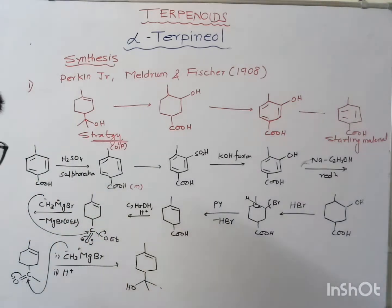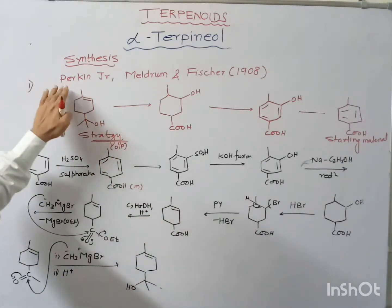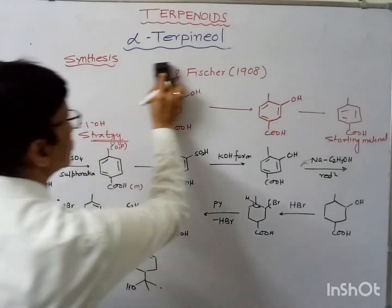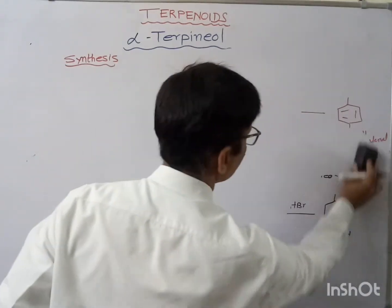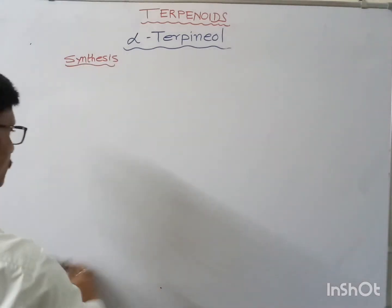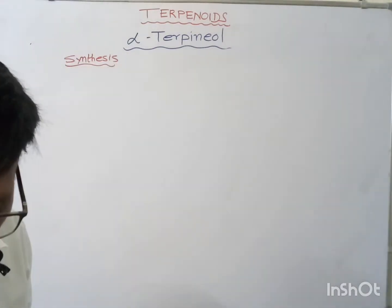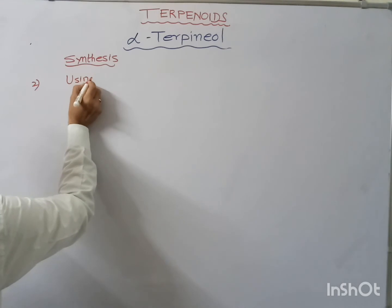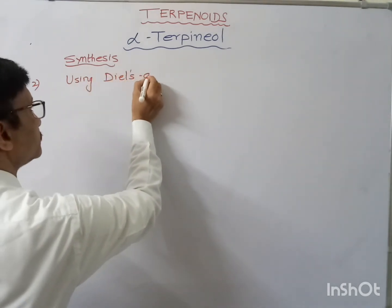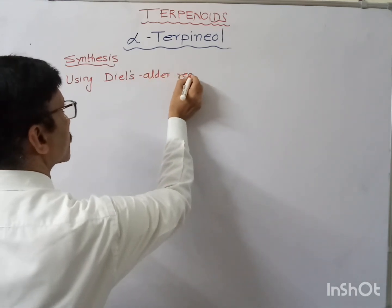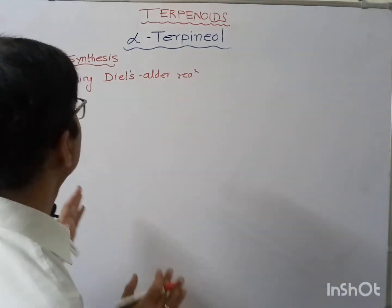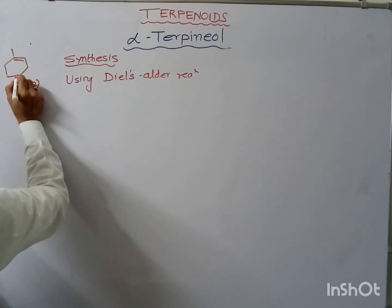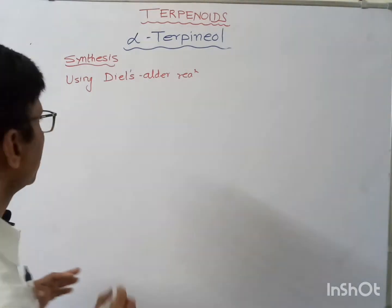So like this, alpha-terpineol can be obtained — this was the method given by Perkin Jr., Meldrum, and Fisher. Now let's see another method. Alpha-terpineol can also be obtained by a second method using the Diels-Alder reaction. What were the reactants taken?